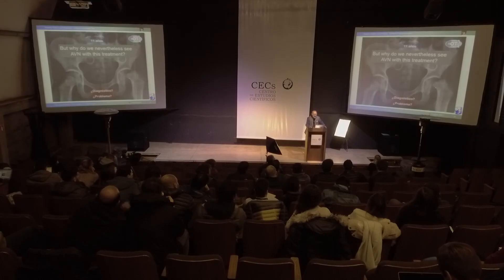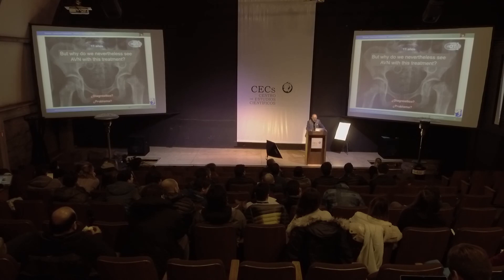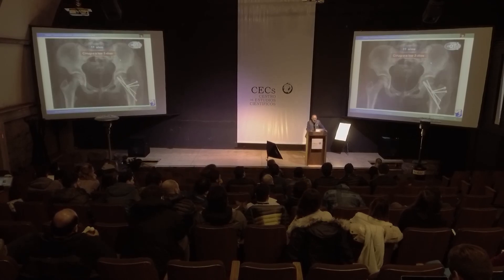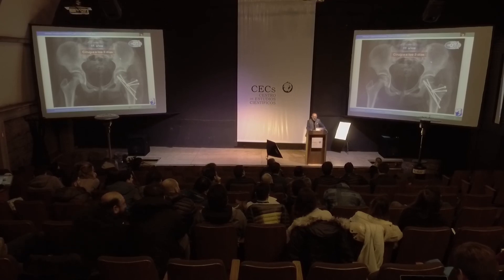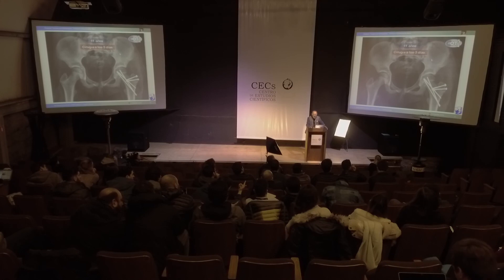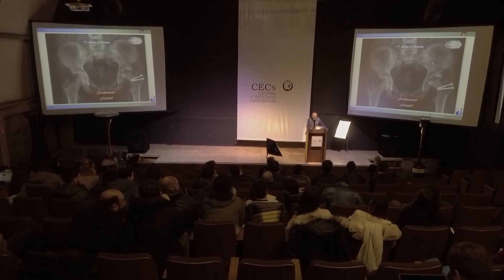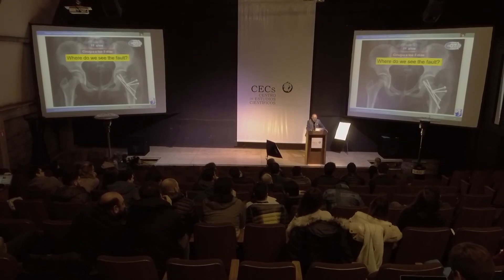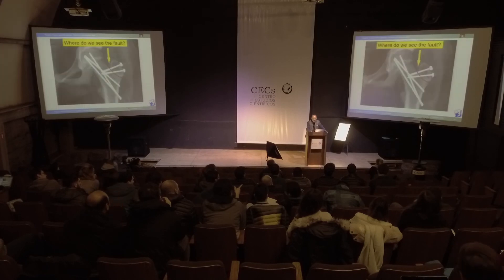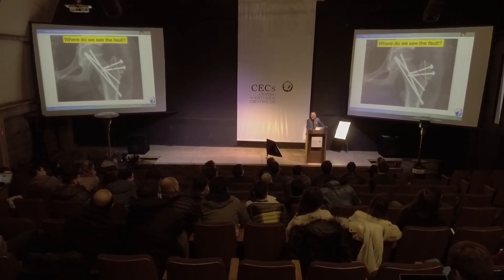Why do we nevertheless see AVN with this treatment? I received this case — this was the situation after open reduction, as I showed before. But when I look at this x-ray and compare it to mine, you can see why it caused AVN. The cut goes here — but the cut has to go here. This is the problem: if the cut is wrong, you destroy the vessel, as you can see on the model. If you do not respect every step of this operation, you will fail. This part of the gluteus medius has to remain on the main fragment — in this case the cut went to the piriformis fossa, which is wrong.